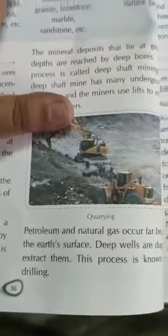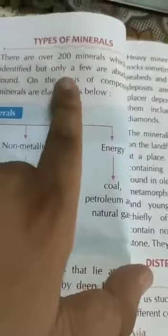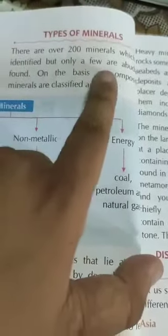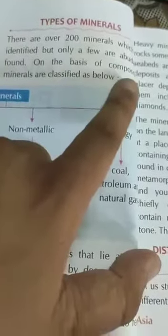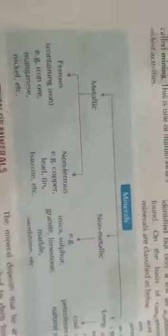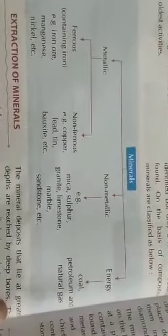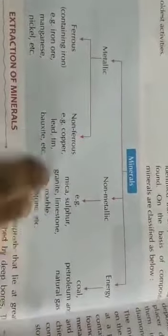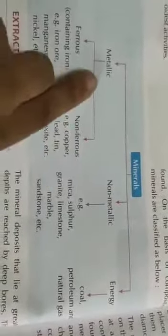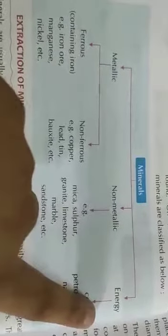Now our topic is types of minerals. There are more than 2,200 types of minerals which have been identified. They are broadly classified into three types: first is metallic, second is non-metallic, and third is energy minerals.